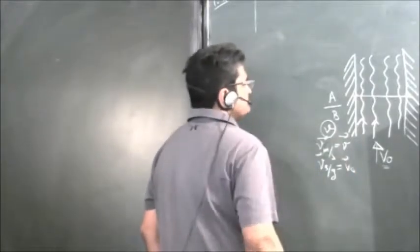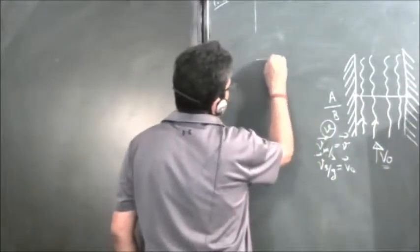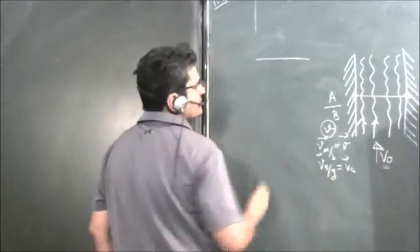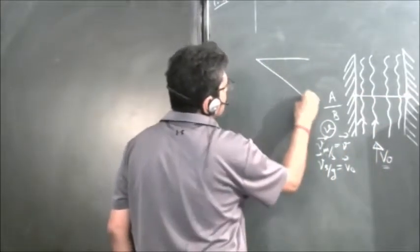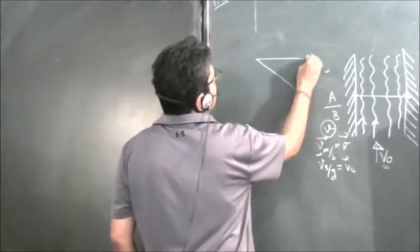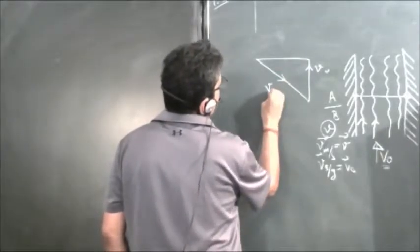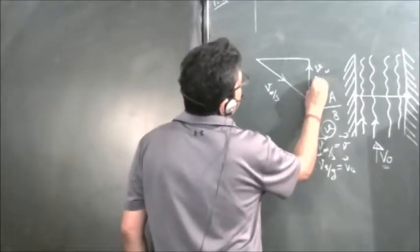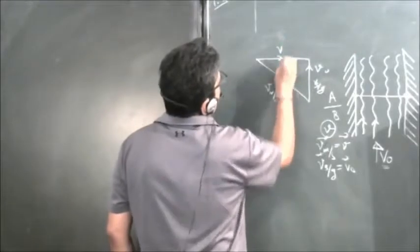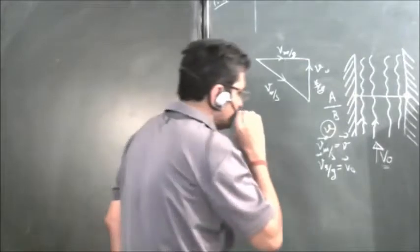One of the swimmers swims in such a way that he lands at the opposite end directly. For this, he should swim at an angle so that the effect of V₀ drifts him correctly. The vector V men with respect to stream combined with V stream with respect to ground gives V men with respect to ground.